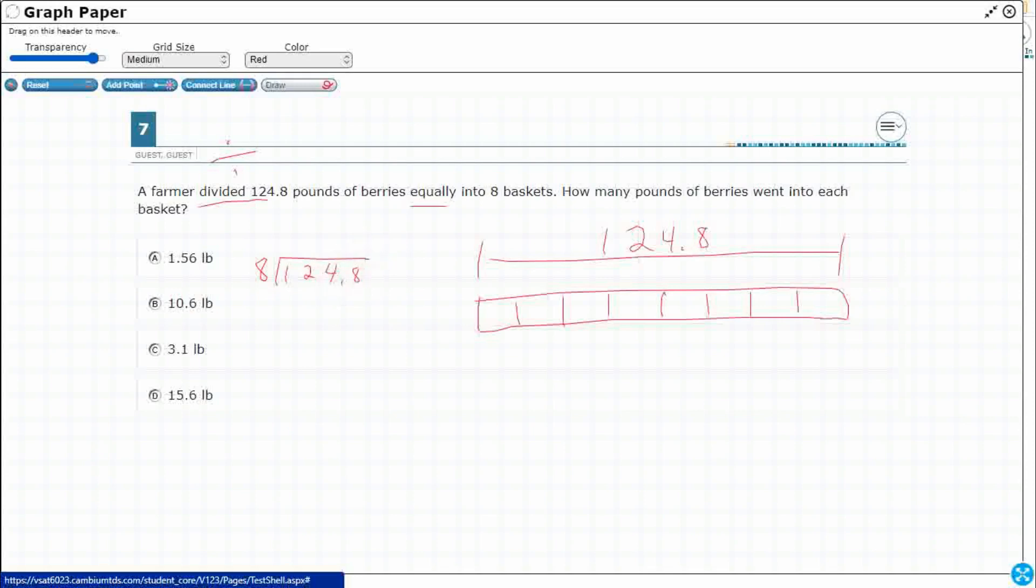The thing about dividing with decimals is that if you have a decimal in the divisor, here is my divisor, you need to move it out by shifting the divisor and the dividend to the left or the right to get rid of that decimal. We don't have a decimal in the divisor.